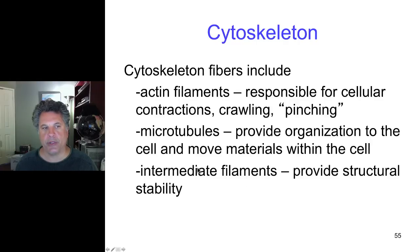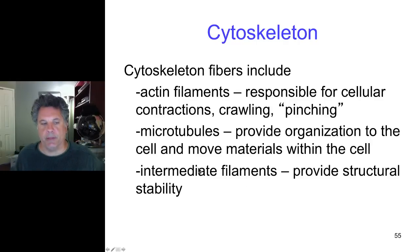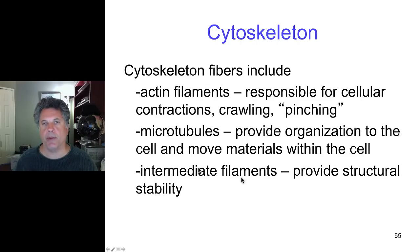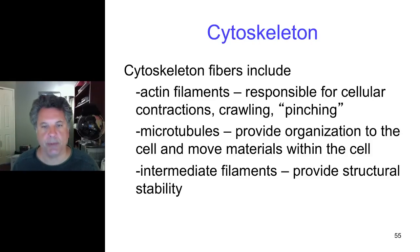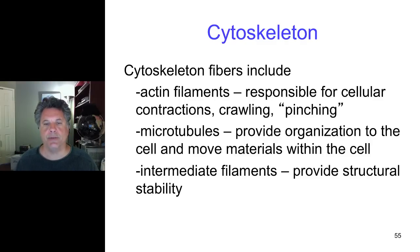The third class of cytoskeletal fibers are the intermediate filaments, and there are a variety of intermediate filaments depending upon the protein that is being polymerized. Keratin, for example — your hair is made out primarily out of keratin — and keratin is an intermediate filament.